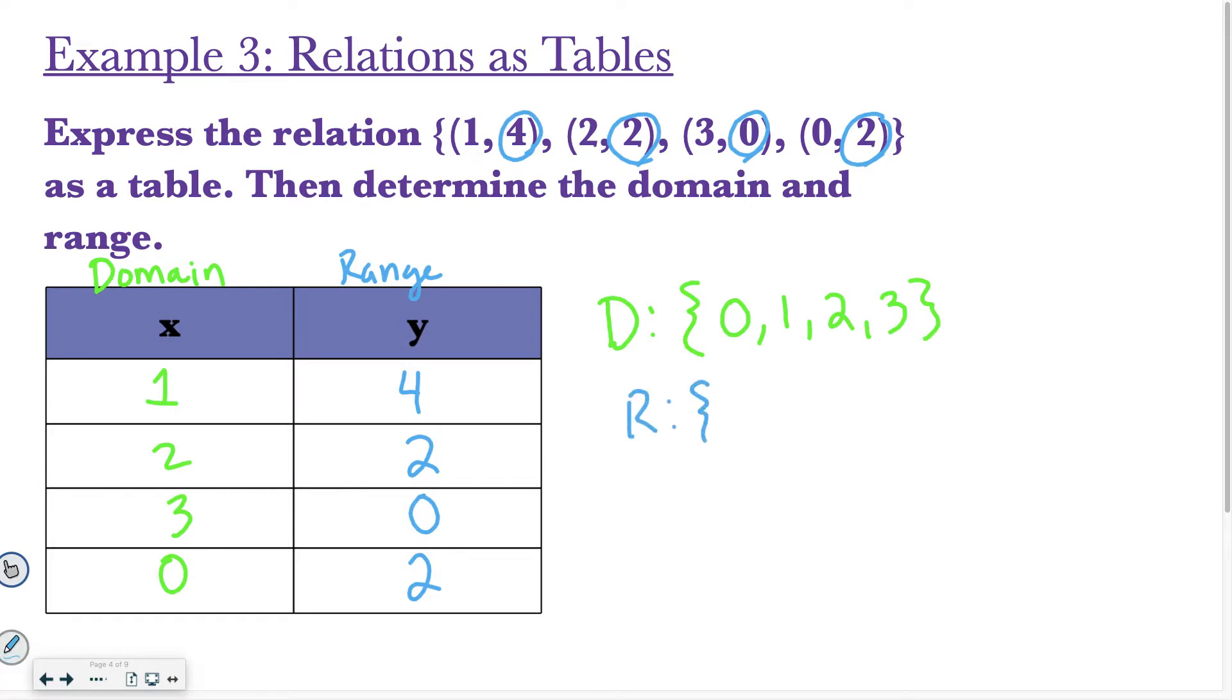Then for my range, I do the same thing. I find my smallest number. And then I have a 2. I have another 2, but I don't have to list it a second time. And then I have a 4. So you can see my range has one number fewer than the domain. I only have three numbers listed there. That's okay. It doesn't always have to be the same amount of numbers.